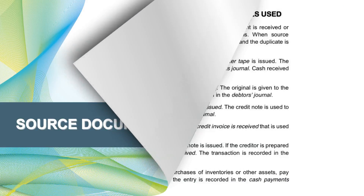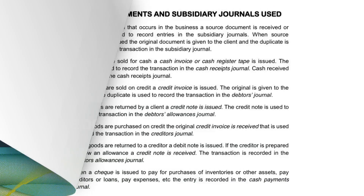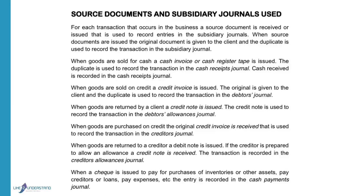Good morning. We will pay attention to source documents and subsidiary journals used. For each transaction that occurs in a business, a source document is received or issued. That is used to record the entries in the subsidiary journals. When source documents are issued, the original document is given to the client and the duplicate is used to record the transaction in the subsidiary journal.